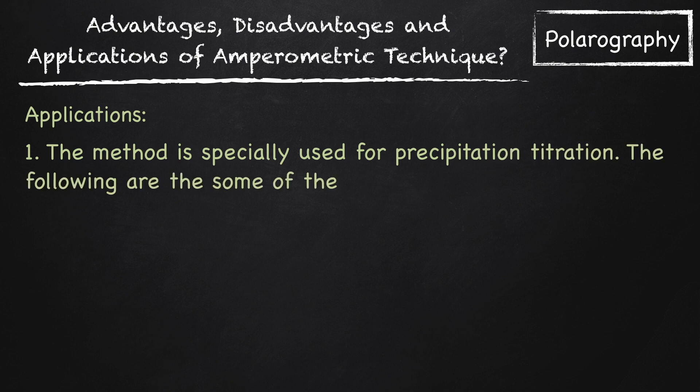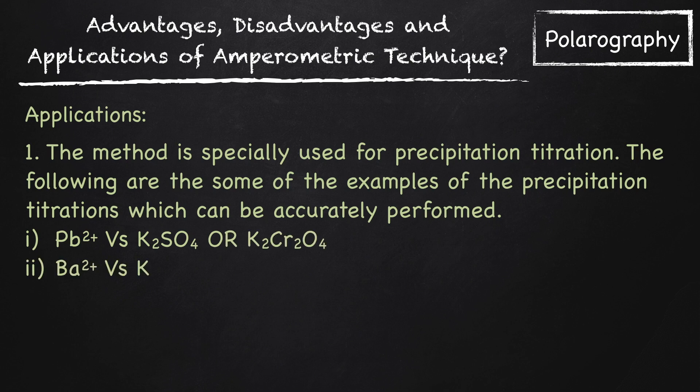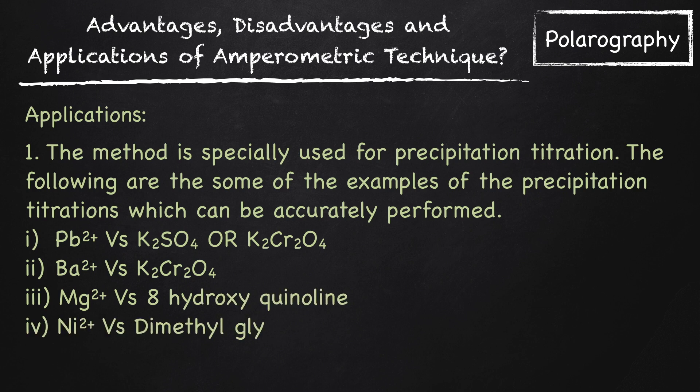The following are some examples of precipitation titration which can be accurately performed: lead vs. sulphate ions or chromate ions, barium vs. chromate ions, magnesium vs. 8-hydroxyquinoline ions, nickel vs. dimethylglyoxime, copper vs. capheron.